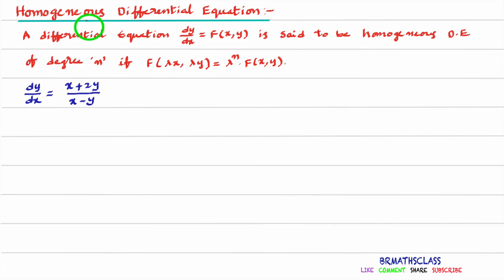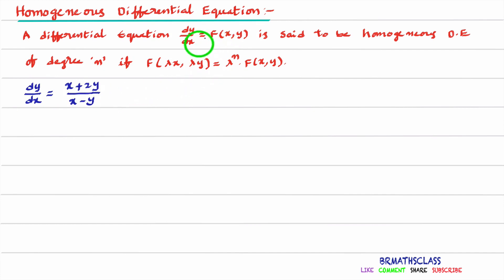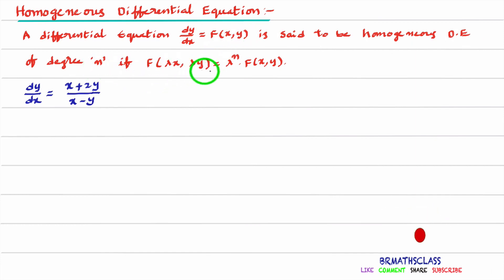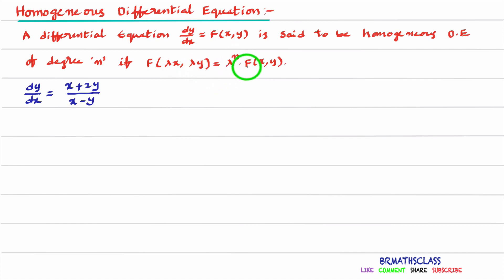Now we will learn what is a Homogeneous Differential Equation. A differential equation dy/dx = f(x, y) is said to be a Homogeneous Differential Equation of degree n if f(λx, λy) = λⁿ·f(x, y). If f(λx, λy) can be expressed in the form λⁿ·f(x, y), then the differential equation is called homogeneous.